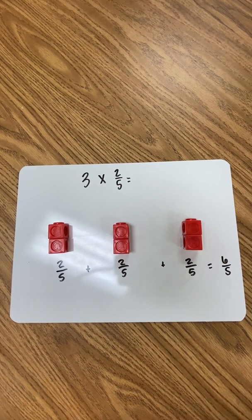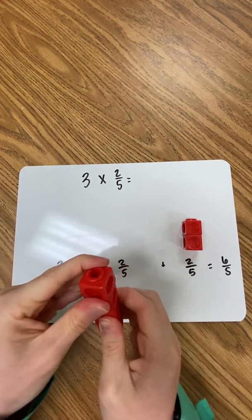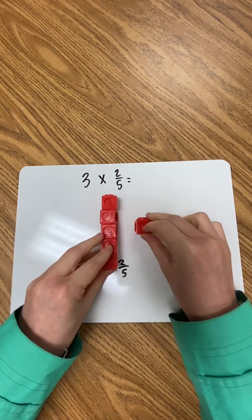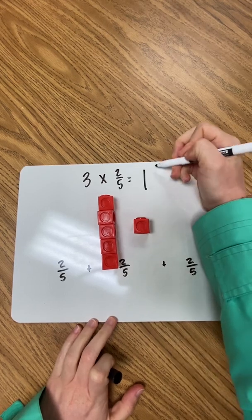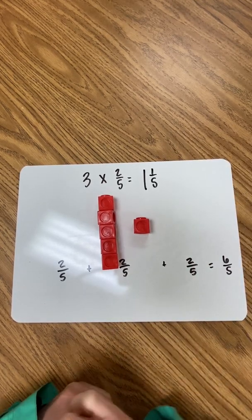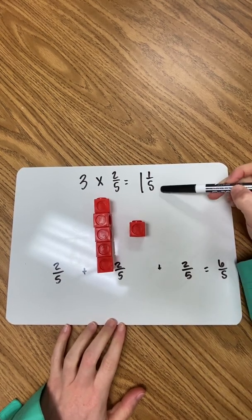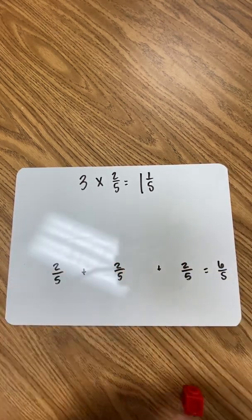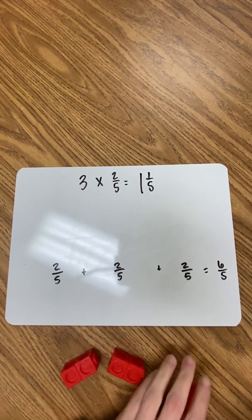Students are able to see two-fifths plus two-fifths plus two-fifths equals six-fifths. You may choose to leave that as an improper fraction or change it into a mixed number. They know a whole is five-fifths, so combining two-fifths and one-fifth gives five-fifths, meaning six-fifths is equivalent to one and one-fifth. Most students can do this conversion quickly once built conceptually.